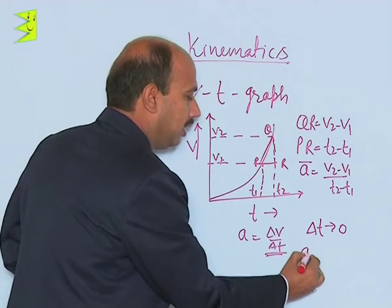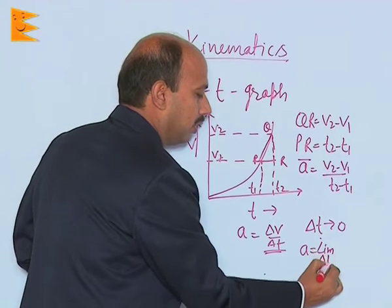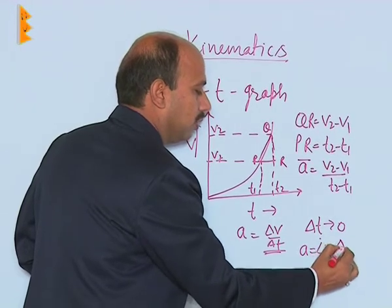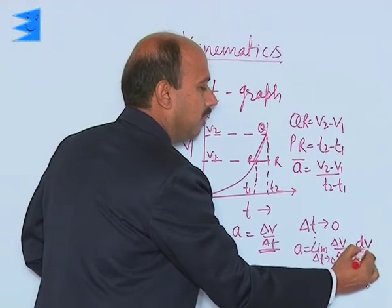Then you can write A is equal to limit delta t tends to 0, delta V upon delta t is equal to dV upon dt.